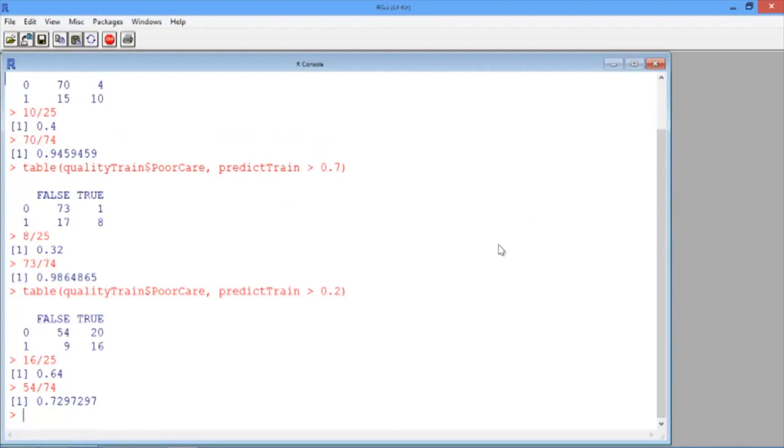To generate ROC curves in R, we need to install a new package. We'll use the same two commands as we did earlier in the lecture, but this time the name of the package is ROCR. So first type install.packages, and then in parentheses and quotes, ROCR, and hit Enter.